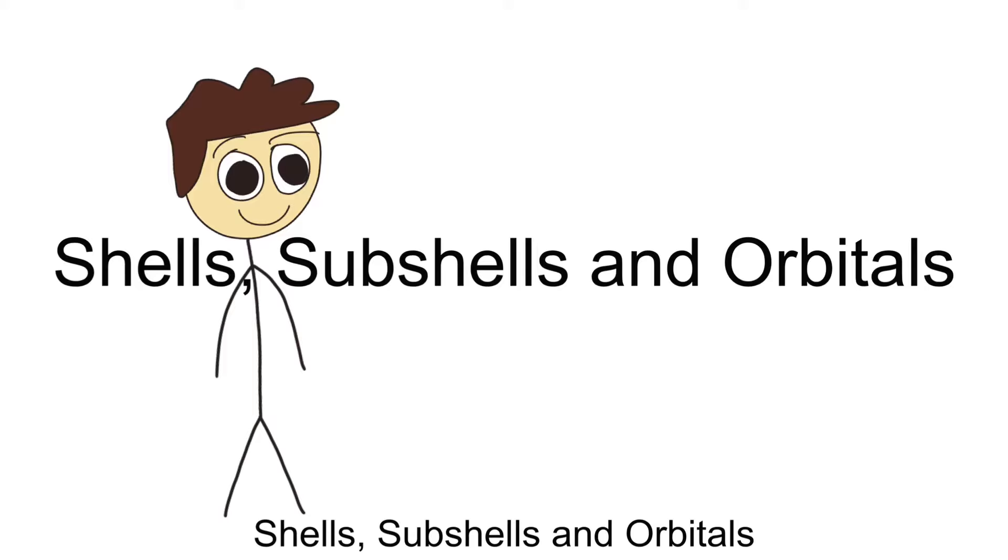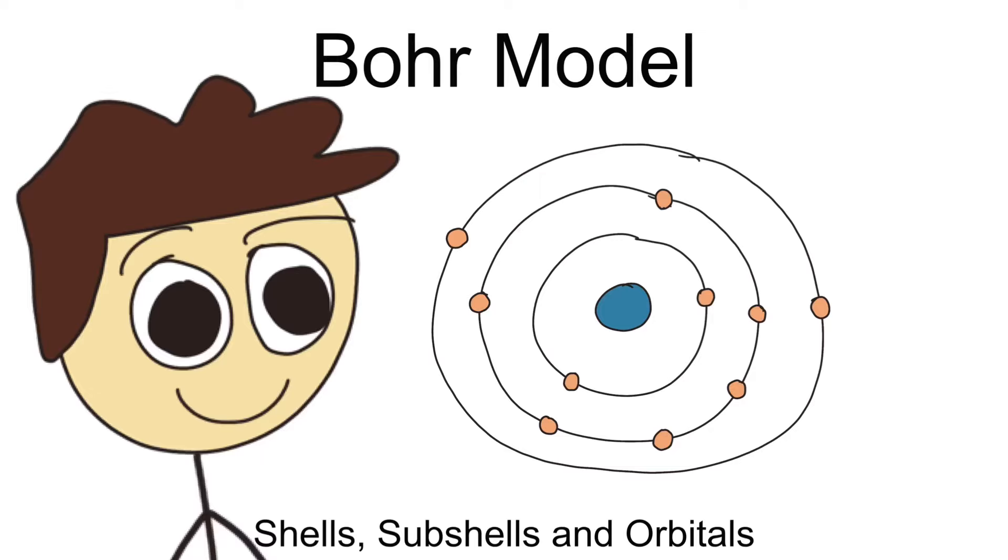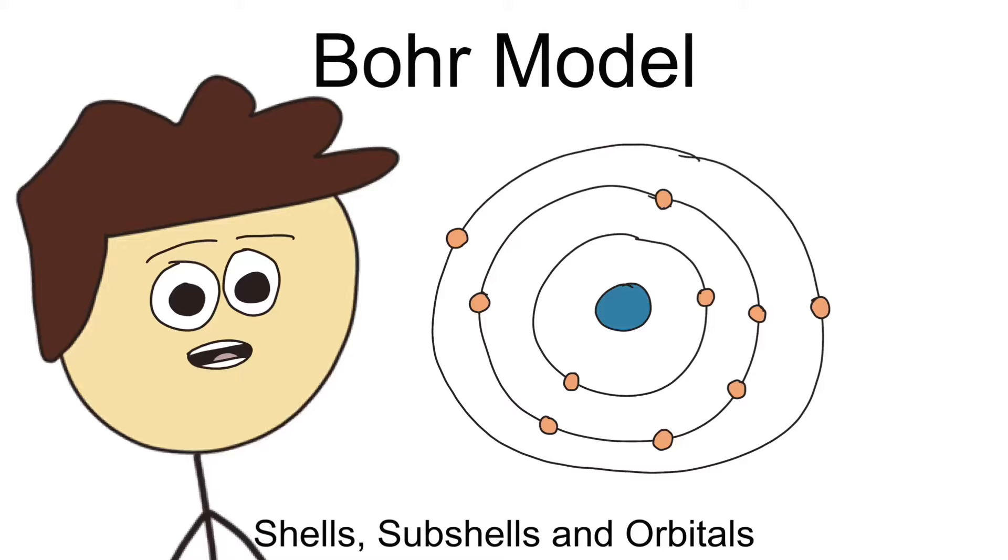When trying to understand the structure of an atom with all its components including protons, neutrons, and electrons, it was pretty difficult to imagine the actual structure of where this all came together. So scientists created a simplified way to address and visualize how these components looked. It's called the Bohr model.